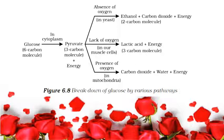Different organisms do this in different ways. Some use oxygen to break down glucose completely into carbon dioxide and water. Some use other paths that do not involve oxygen. In all cases, the first step is the breakdown of glucose, a 6-carbon molecule, into a 3-carbon molecule called pyruvate. This process takes place in the cytoplasm.